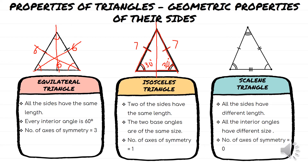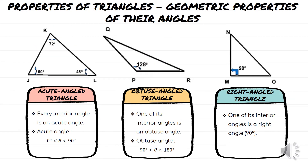Now, the scalene triangle — all the sides have different lengths. These 3 lines indicate that these 3 sides have different lengths. They also have different sizes of angles, and they have no axis of symmetry.